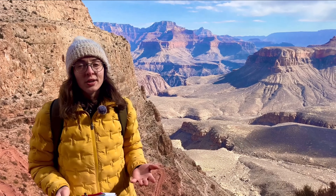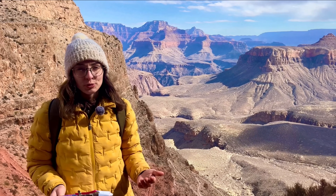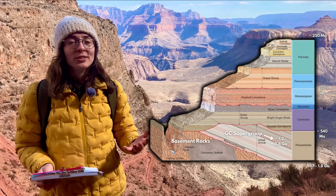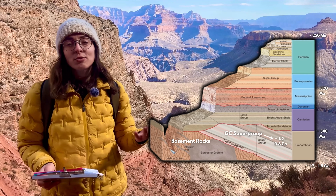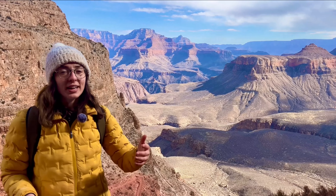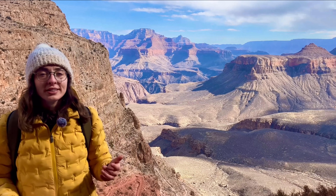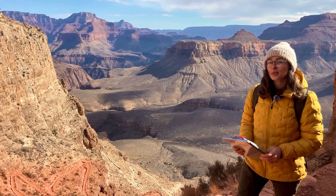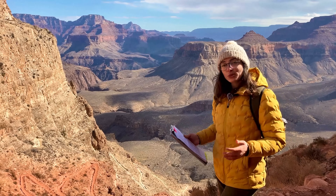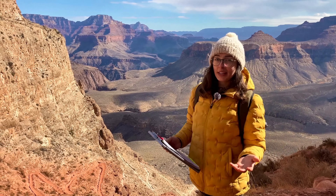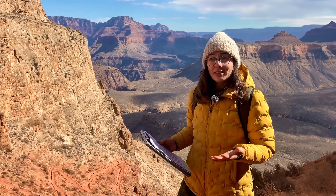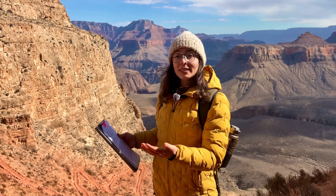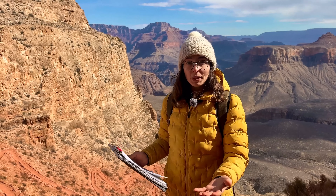Above the basement schist and granite, we have the Grand Canyon Supergroup — a mix of sedimentary rocks deposited during the Proterozoic Eon in a rift basin environment, which likely formed as the ancient supercontinent Nuna or Columbia broke up. These rocks were deposited 1.2 to 0.8 billion years ago, several hundred million years after the 1.7 billion year old rocks below.